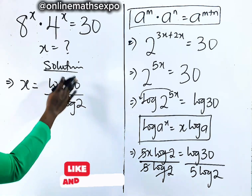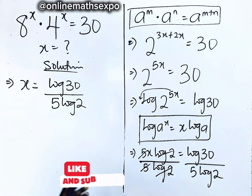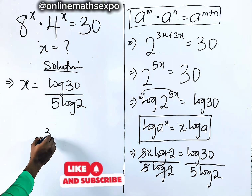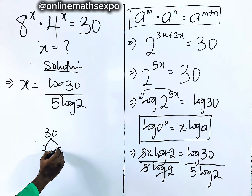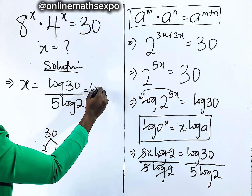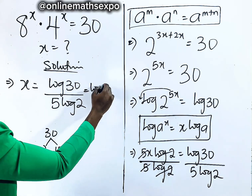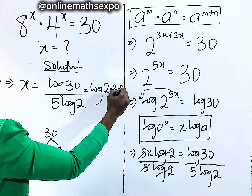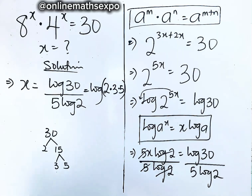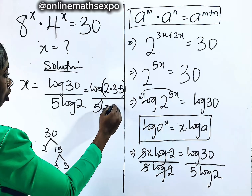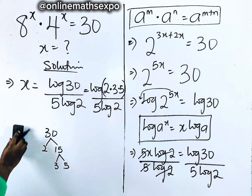Do we leave it at this point? No — it's not yet simplified. So we're going to simplify, knowing that 30 is the same as 2 multiplied by 15, and 15 is 3 multiplied by 5. So this can be written as log of 2 multiplied by 3 multiplied by 5, divided by 5 log 2.